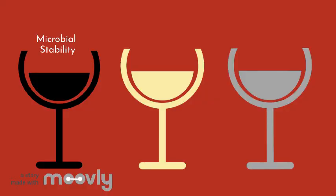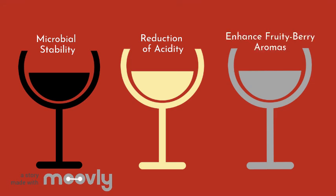This provides microbial stability through the removal of a fermentable carbon source from the wine and reduction of acidity by increasing wine pH by 0.2 to 0.5 units. Malolactic fermentation can also enhance fruity berry aromas. Almost all red wines undergo malolactic fermentation and a range of white wines benefit from this bacterial fermentation.